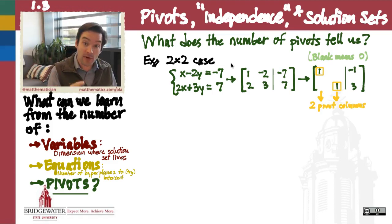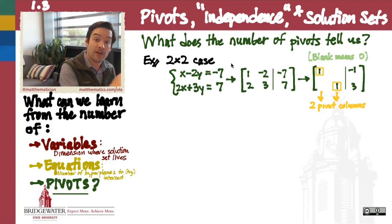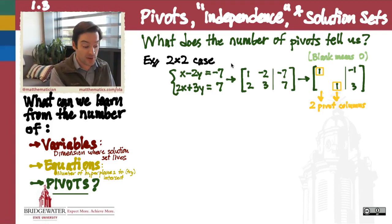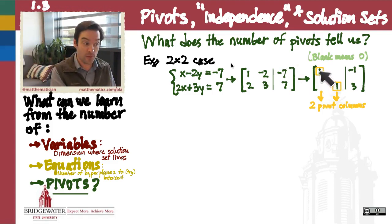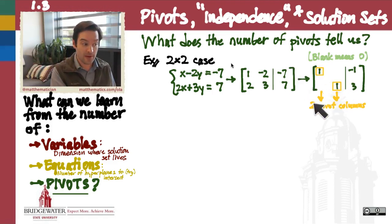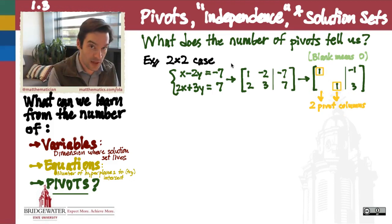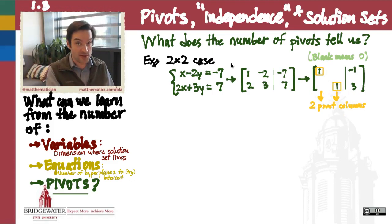In this reduced row echelon form, we find out that there are two pivots in my matrix. Remember, a pivot is an entry which only has 0s underneath and to the left of it. So this one right here is a pivot, and this one right there is also a pivot. That means that there are two columns in my augmented matrix that have pivots in them.